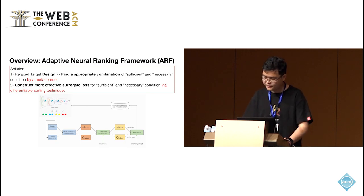To address these challenges, we proposed the Adaptive Neural Ranking Framework, also named as the ARF. We decomposed the relaxed target designing problem into the problem of finding an appropriate combination of sufficient and necessary condition and solve it by a multi-task meta learner. For optimizing the sub-targets, we use permutation metrics to reformulate the targets and borrow the differentiable sorting technique to achieve more appropriate end-to-end learning. Let's see the details of the ARF step-by-step.